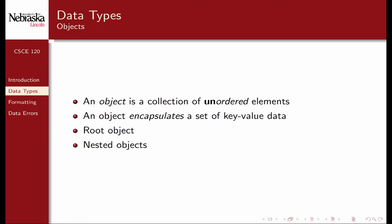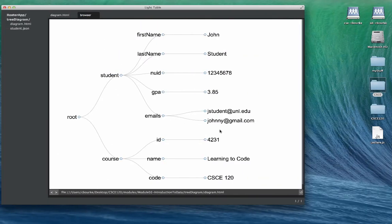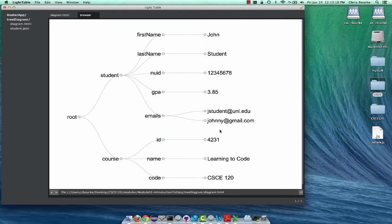An object is a collection of unordered pairs that encapsulates a set of key-value data. We've already seen the root object, which is how JSON data begins, but we also saw an example with nested objects. The previous example where we have a student and a course — those are part of the root object. The student itself is an object containing five elements, and the course is an object containing three elements.